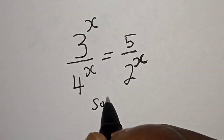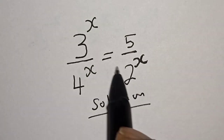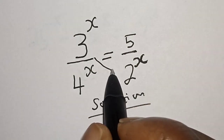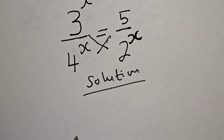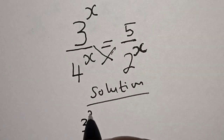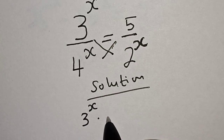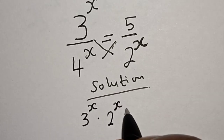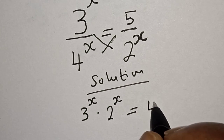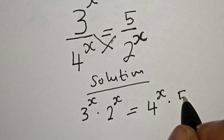Solution. Let's cross multiply. Here is 3 raised to power x multiplied by 2 raised to power x is equal to 4 raised to power x multiplied by 5.